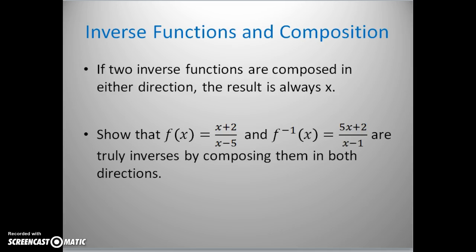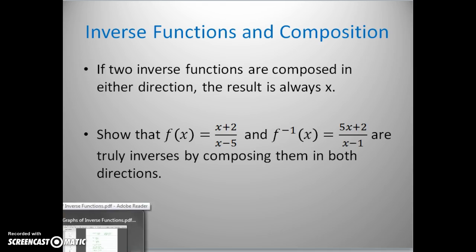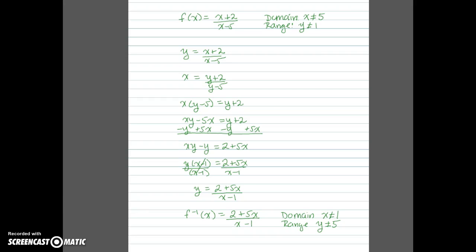Now let's look at the composition of inverse functions. If we compose two inverse functions in either direction, the result is always x. Think of it this way: the inverse undoes whatever the function does. If you start with an input, the function manipulates it, and the inverse undoes all those manipulations to bring you back to your original input x. We'll use the two functions from the last example and show they are inverses by composing them in both directions: f of f inverse, and f inverse of f.